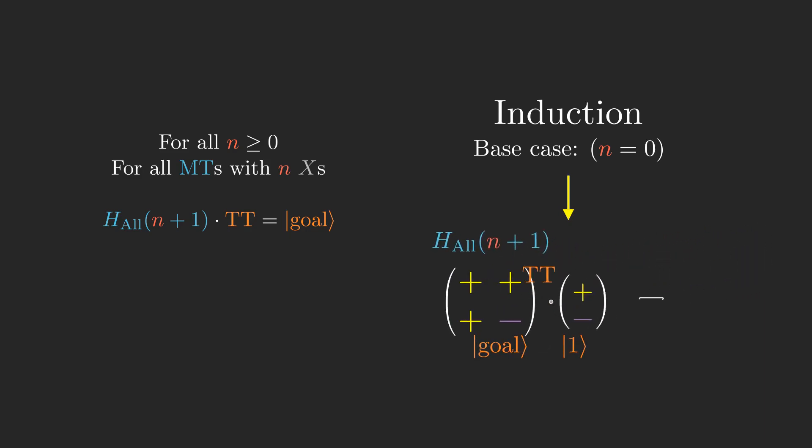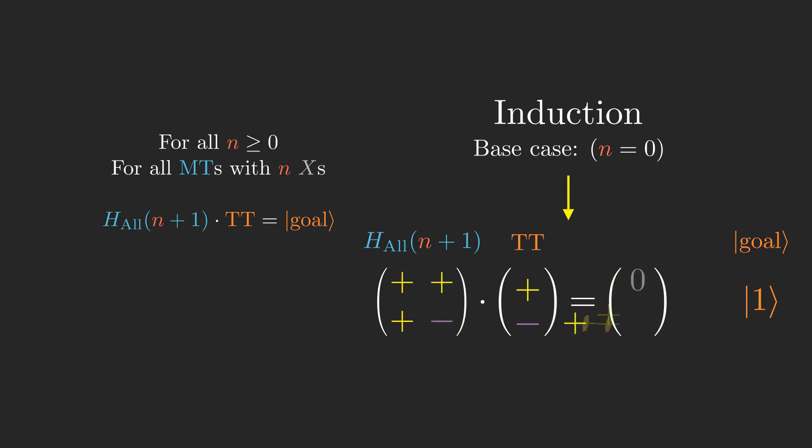Goal is a bit string with a single bit 1 for answer, because there are no bits for the x's. So h times tt, as we can see, leaves all of the amplitude on the basis state 1, which is the goal state. So the base case checks out.